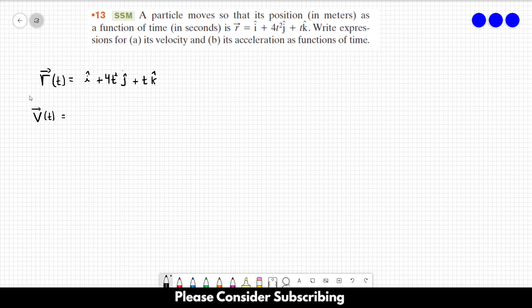Since we have the function of the position, we just have to derive r in respect of time. So we just have to derive this function over here, which is i plus 4t squared in the j direction plus t in the k direction, and this is over dt.